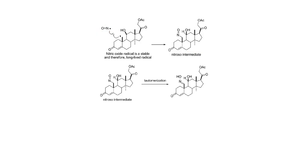Upon tautomerism — let's have a look here — hydrogen is present. So upon tautomerism, a 1,3-shift of the hydrogen atom occurs: position 1, 2, and 3. So the hydrogen atom shifts from the first position to the third position as a result of this tautomerism. As a result, an oxime is produced, which is the final product of this reaction. So in the Barton reaction, alcohols are converted into oximes.